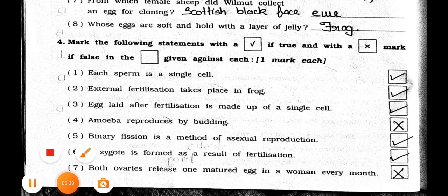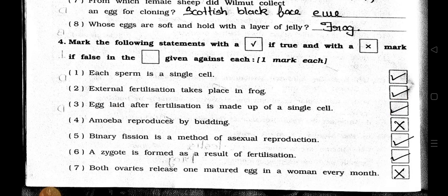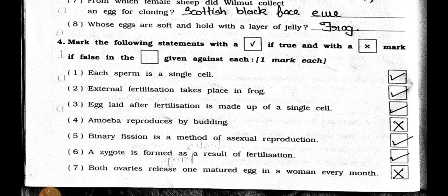Number 1: A sperm is a single cell? It's true. Number 2: External fertilization takes place in a frog? It's true. Number 3: An egg laid after fertilization is made up of a single cell? It's true. Number 4: Amoeba reproduces by budding? It's wrong, false.